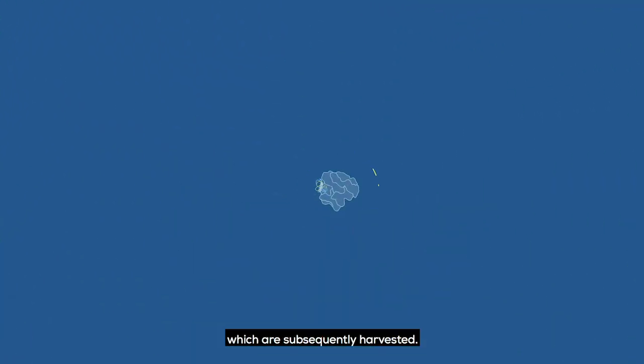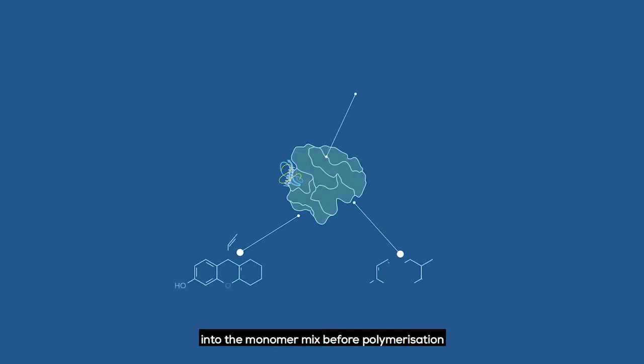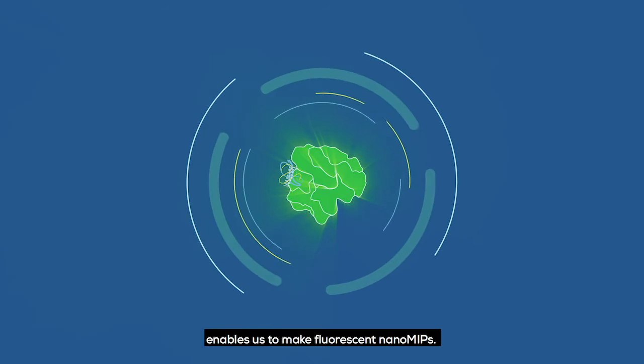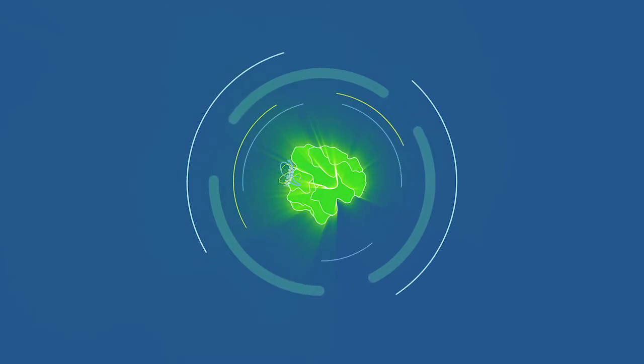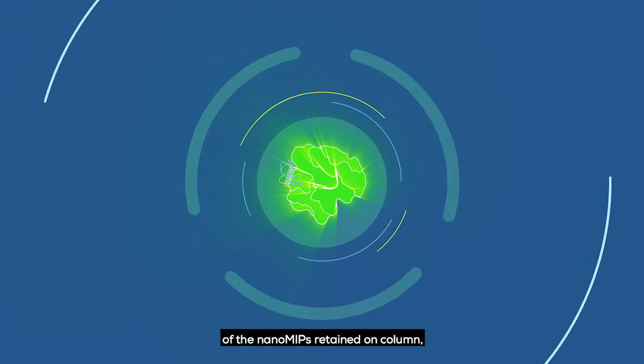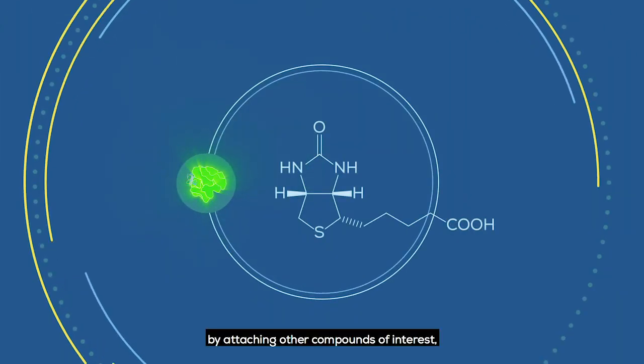Mixing fluorescent monomers into the monomer mix before polymerization enables us to make fluorescent nano MIPs. We can further modify the surface of the nano MIPs retained on column by attaching other compounds of interest.